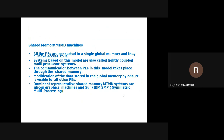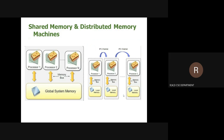In Shared Memory MIMD machines, a global memory is shared for multiple instructions and multiple data. Communication between processors takes place through this shared memory. Modification of data stored in the global memory by one processor is accessible by all other processors. Best examples are Silicon Graphics machines, Sun Microsystems, Sun, IBM, and symmetric multiprocessing systems.